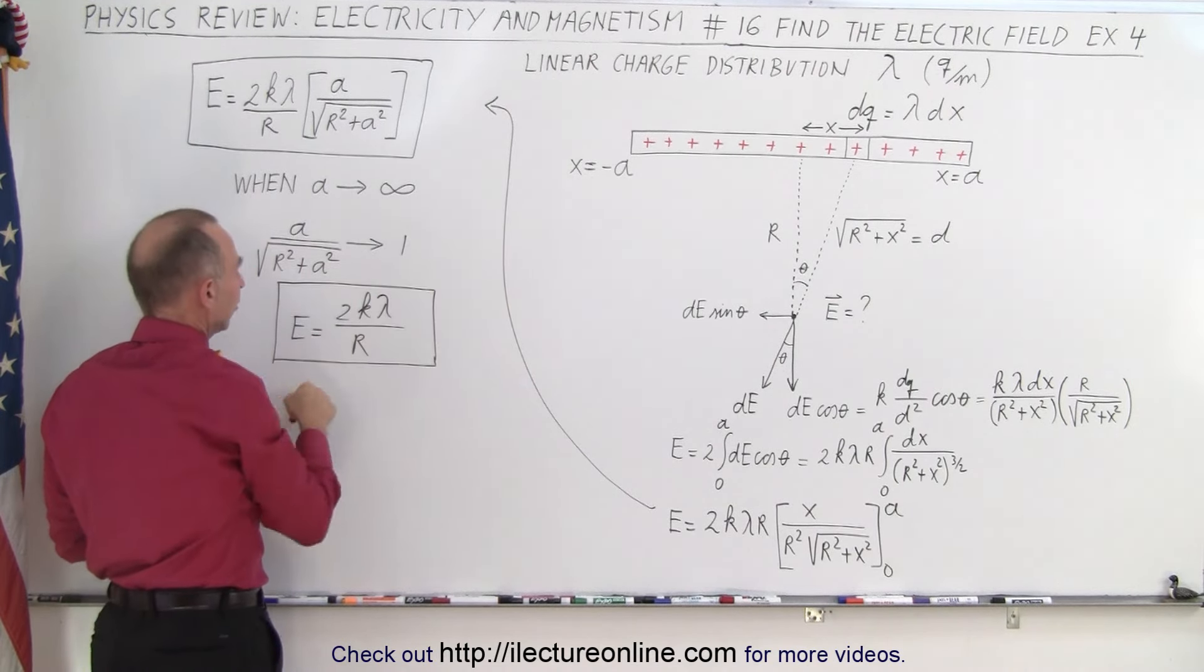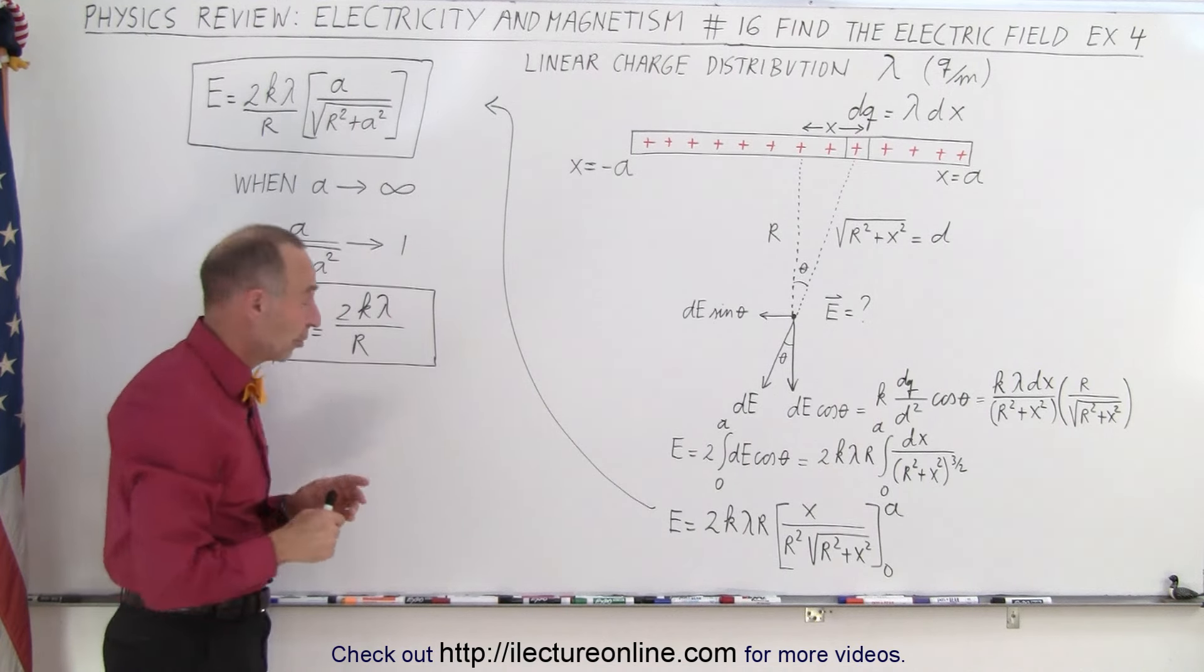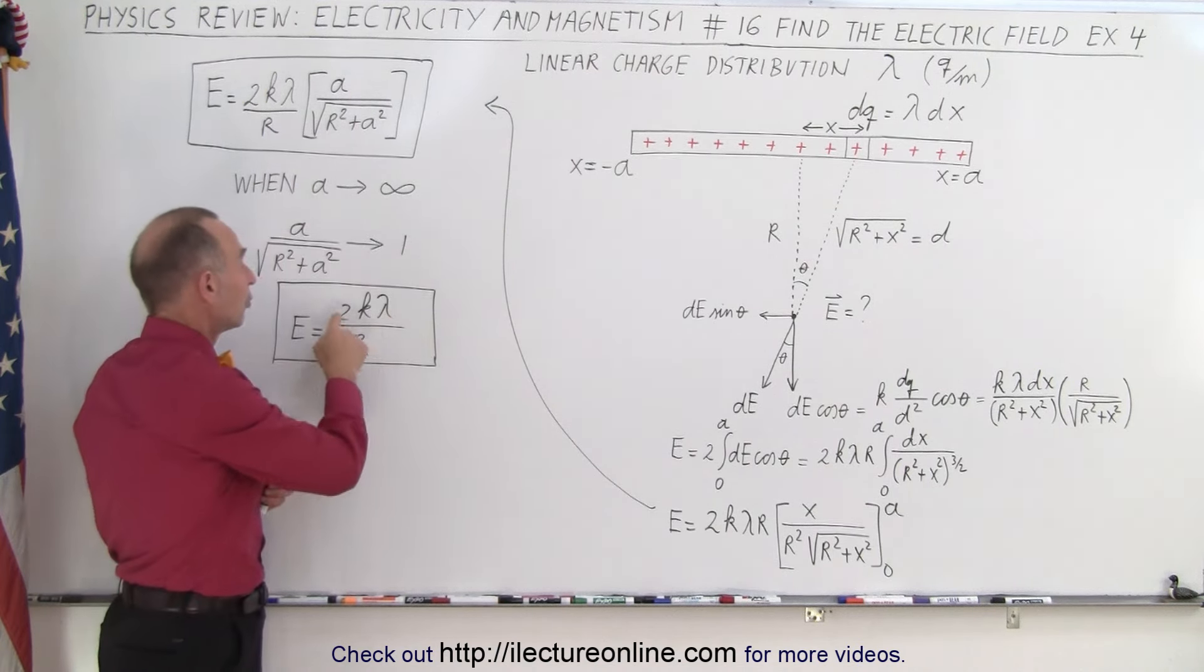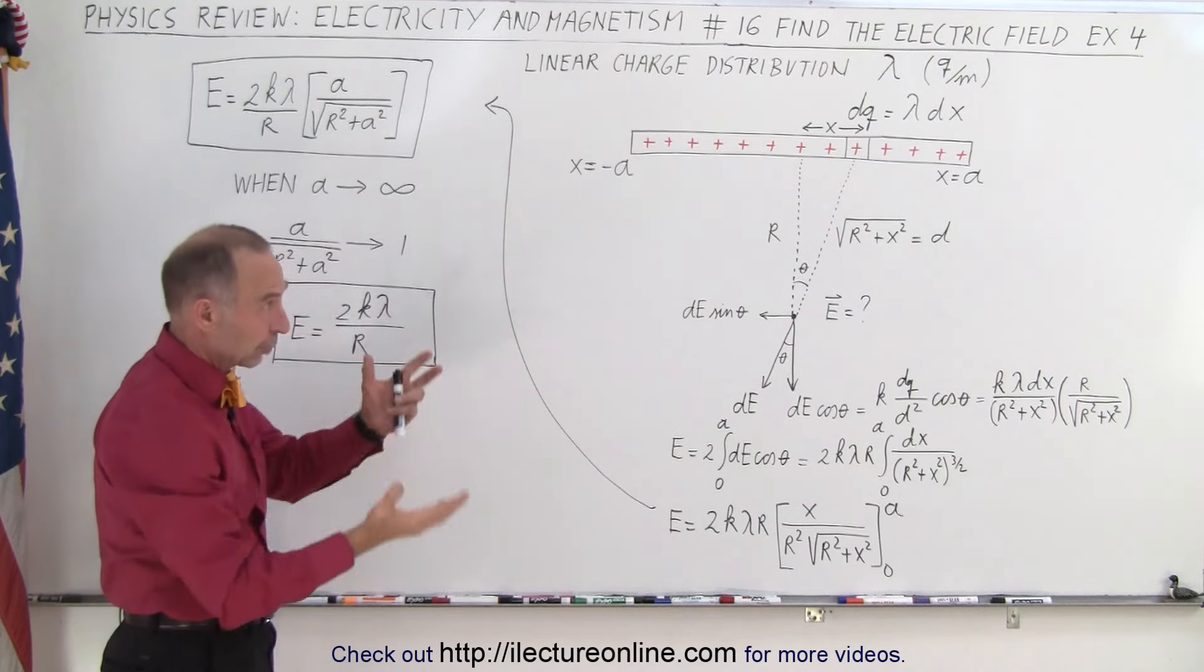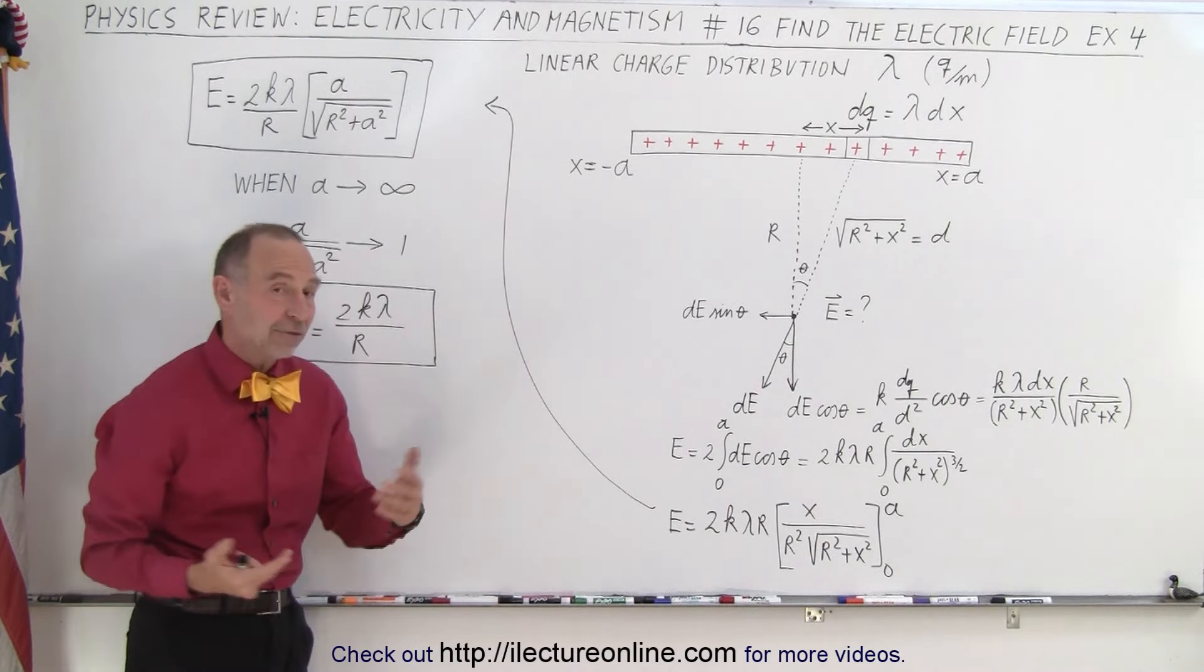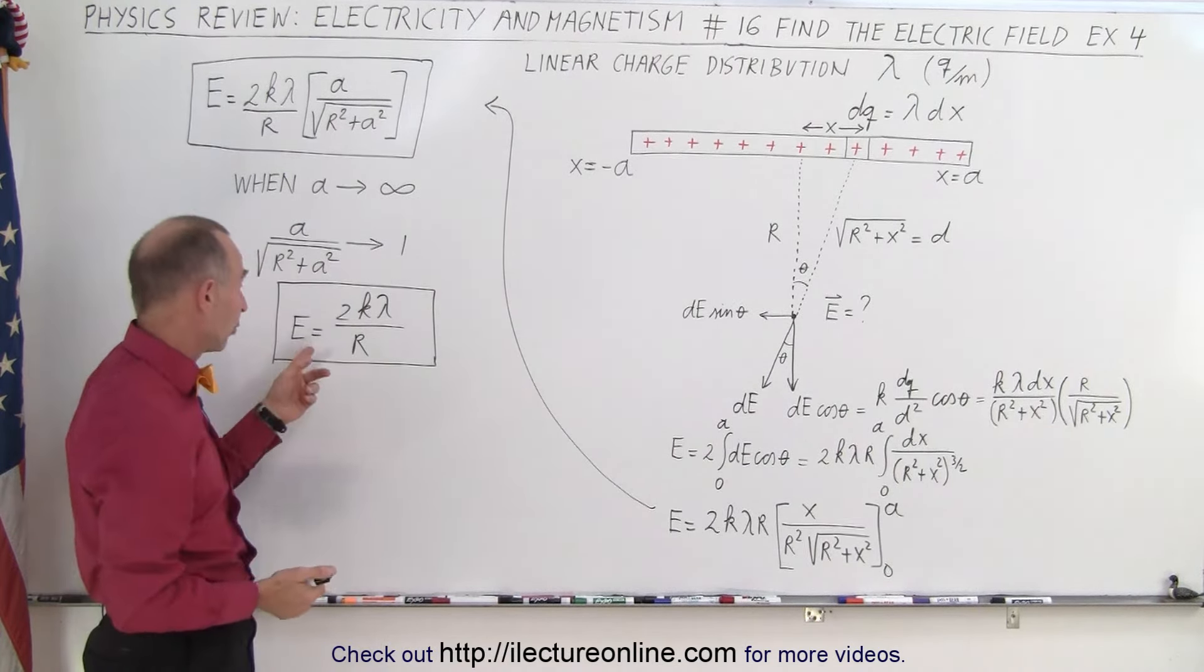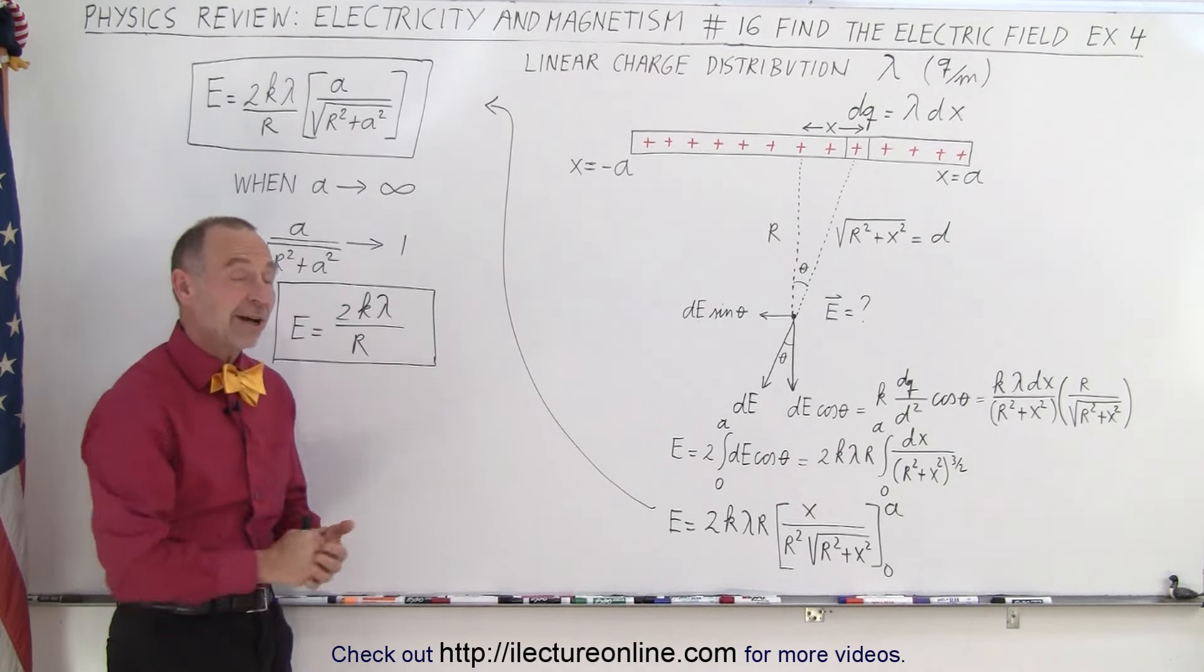And then you can say when a approaches infinity, in other words gets very big, this ratio becomes one, and therefore this is then the electric field strength. Now notice it's only the magnitude, which is 2k times the charge density λ divided by r. Of course depending upon the orientation of the charges, then you could turn this into a vector. In this case it would be in the negative direction in the y direction, so you can turn this into a vector quantity if you like. But that is how it's done.